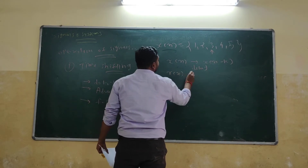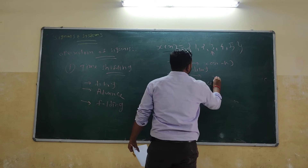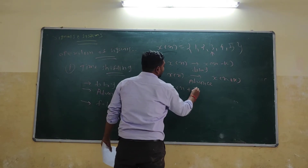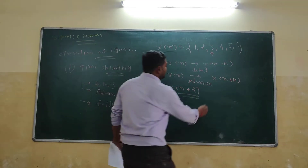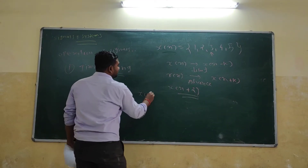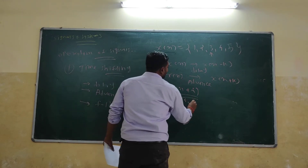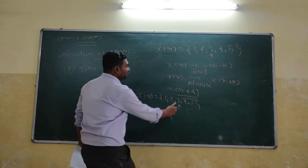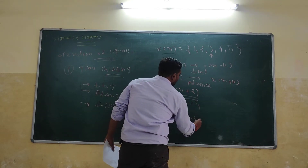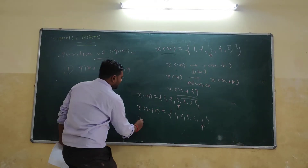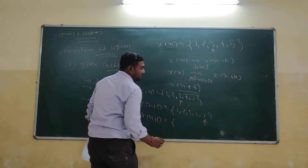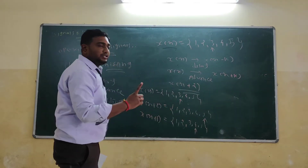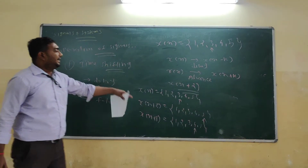The second one is advance. So advance is x[n plus k]. This will be called as advance. In this case, if they say x[n plus 2], that means with the same signal values 1, 2, 3, 4, 5, you have to find x[n plus 2], so your arrow will move to the right side. Similarly, x[n plus 1] means 1 sample advance — 1, 2, 3, 4, and 5 — and the arrow moves to the right side by 1 sample. So that is the advance.